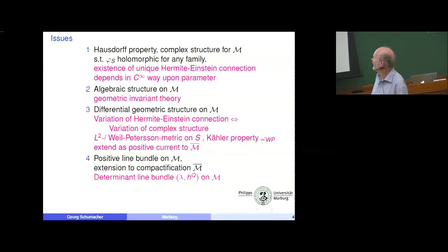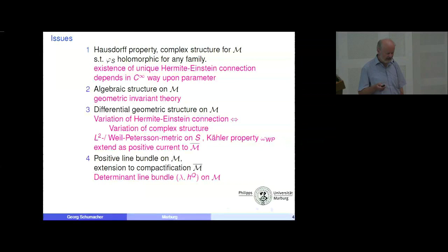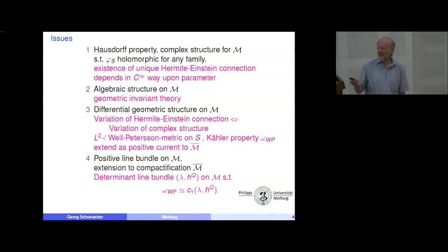Here we cannot specify the compactification, which is one issue. This line bundle would be some analog of Mumford's bundle lambda and it would be a determinant line bundle. In the end, we will have on one hand the Weil-Petersson current, and on the other hand the Chern form of the determinant line bundle with a certain metric, which is H_Q, where Q stands for Quillen. We want to talk today about orbifold structures.